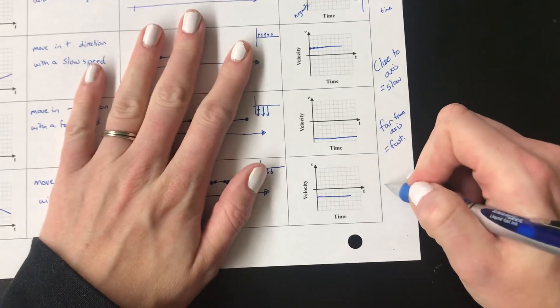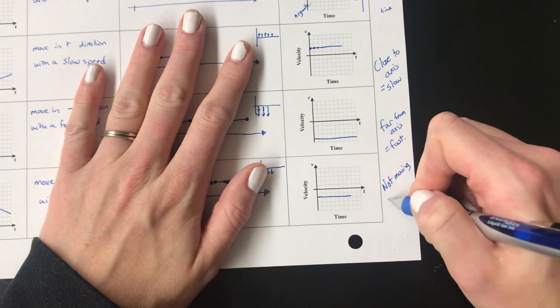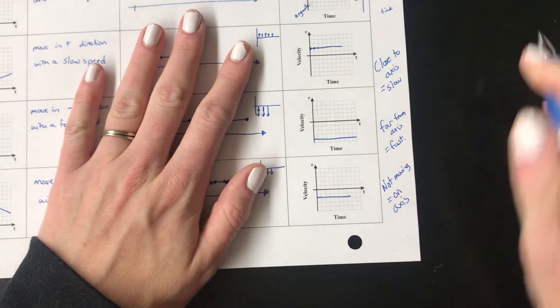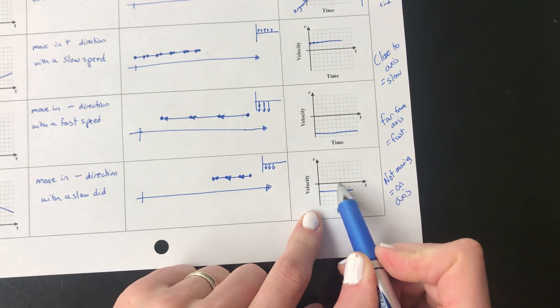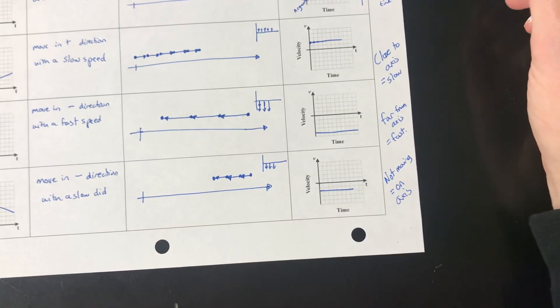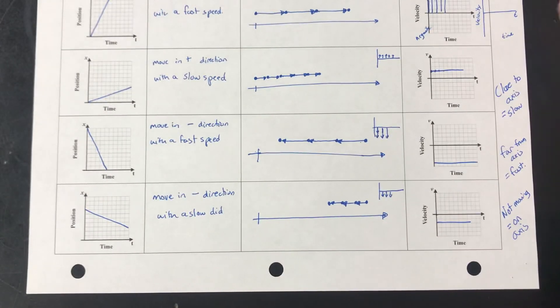Where would the line be if it's not moving? We would put it on the axis if it's not moving because the slope would be zero. Because it's not going anywhere. Its speed is zero and it's staying zero. So the line would go all the way across right along that axis. Alright, again, ask your teacher if you have questions. Thanks for watching.